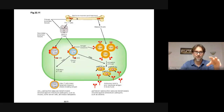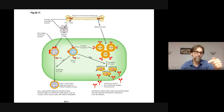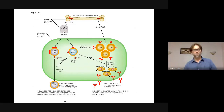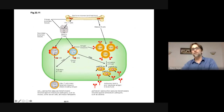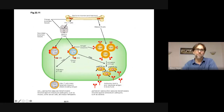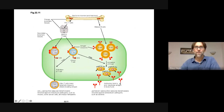All lymphocytes are made in the red bone marrow. B cells mature in the red bone marrow — that's why they're called B cells, B for bone. T cells migrate to the thymus and mature there — T for thymus. On a diagram, cell-mediated immunity is on the left side and antibody-mediated immunity is on the right side, with B cells leading to antibodies at the bottom.